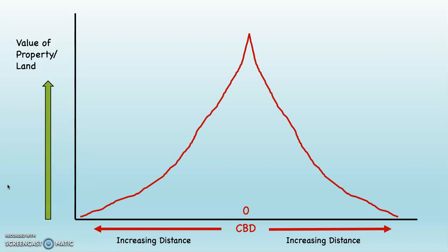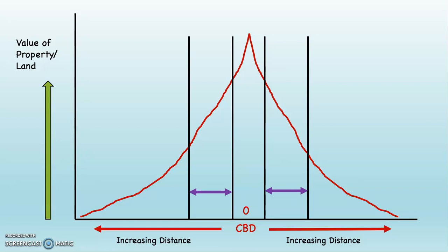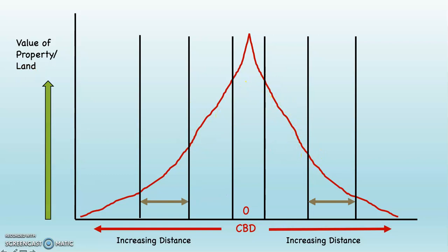Now I've graphed property values. The highest values are right in the CBD. As we come down to the left or right, the graph line drops, indicating that property values are going down. In between the two black lines where the green arrow is, property values are at their absolute highest. As we increase distance where the purple arrows are, property values go down. Further out at the brown arrows, they decrease even more. And at the blue arrows, they decrease further still. So increasing distance away from the CBD results in decreasing property values and decreasing land values.